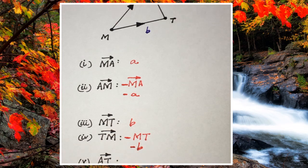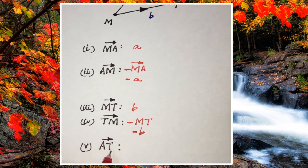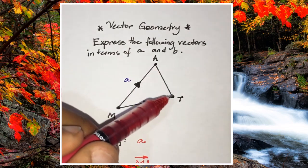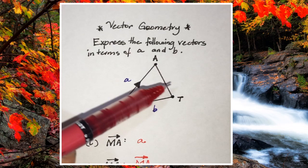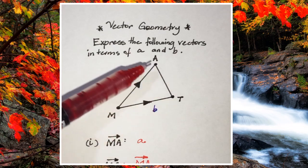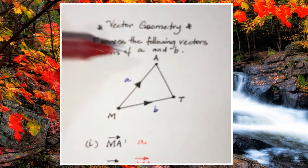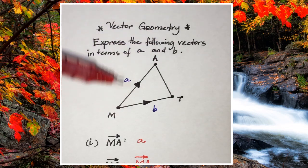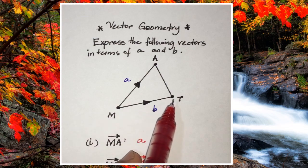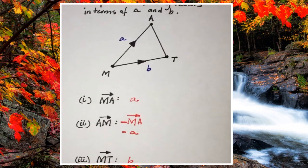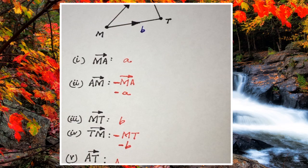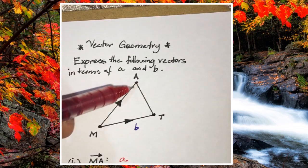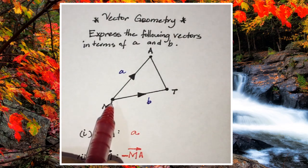When you talk about vectors, think about direction. We need to find the vector a to t — starting at a and traveling to t. Notice there's no direct a or b label on that path. So how else can we get there? From a, I can travel down to m, and then from m I make a turn and travel towards t. I'm going to write down a vector map. I'll start at a, so I need a to m, and then from m to t.